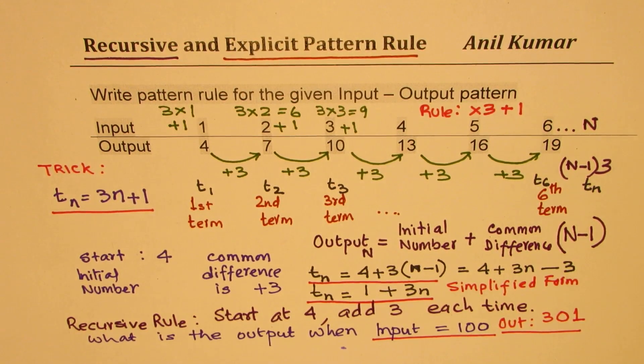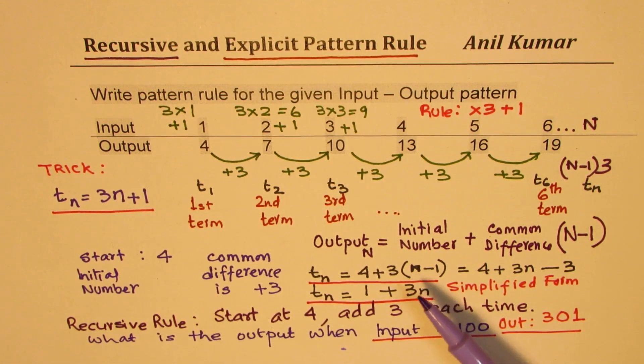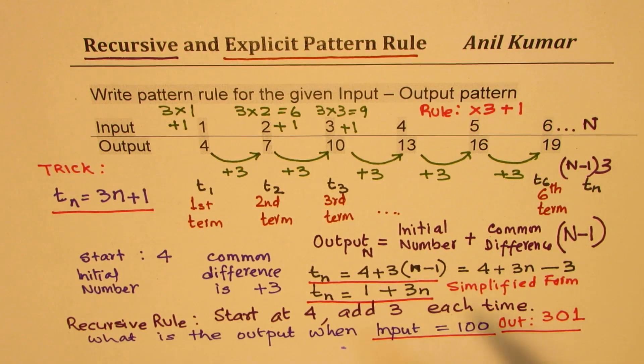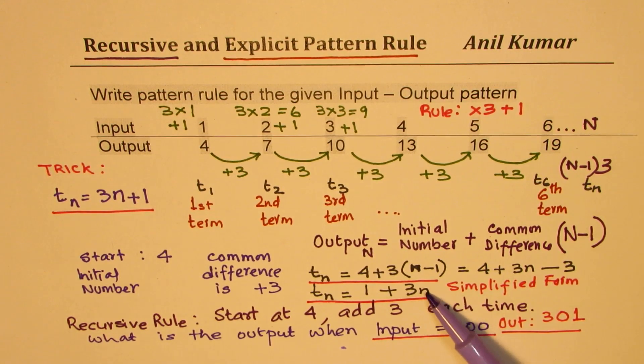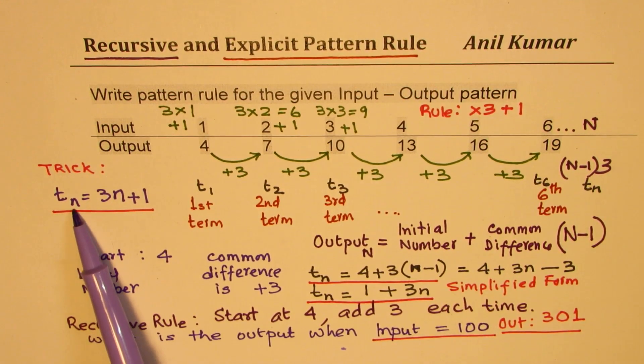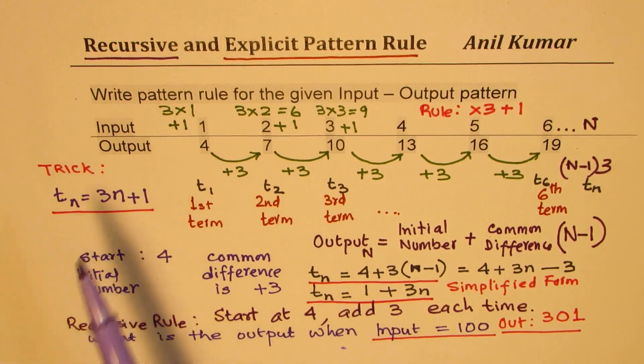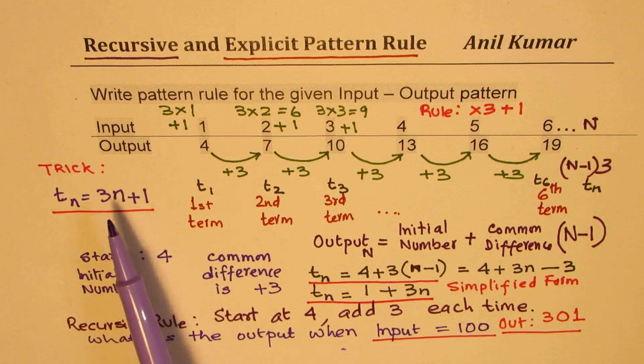How algebra? Since we introduce this variable n, n could be any number. It could be 1, 2, 3, 4, or 100. Any number n. That introduces algebra to you. And the rule which we are saying that nth term is 3 times n plus 1 is the explicit rule where n is a variable which can have any value. Perfect.